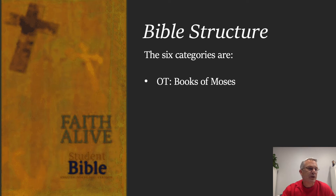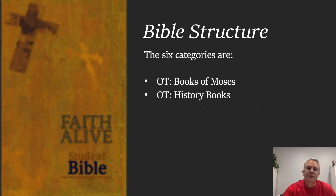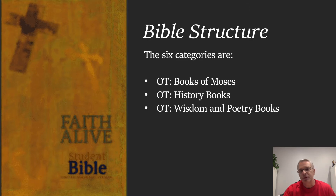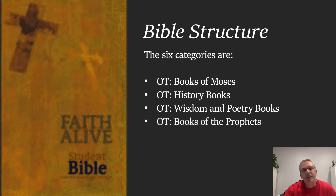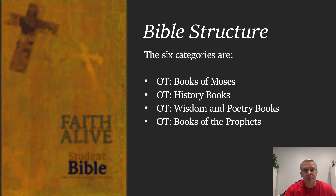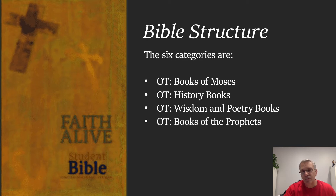The first category in the Old Testament is the books of Moses — the first five. Then you've got the history books, and then the wisdom and poetry books. Then you have the books of the prophets: major prophets and minor prophets. The major prophets have a lot of content — books like Isaiah and Jeremiah are going to be a lot longer than some of the lesser prophets, like the book of Jonah, which is only four chapters long.